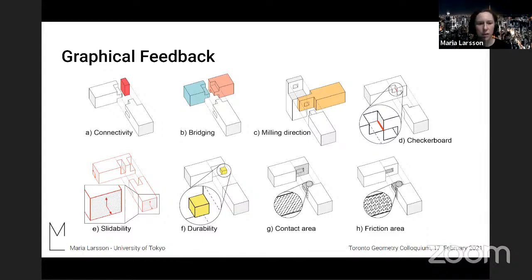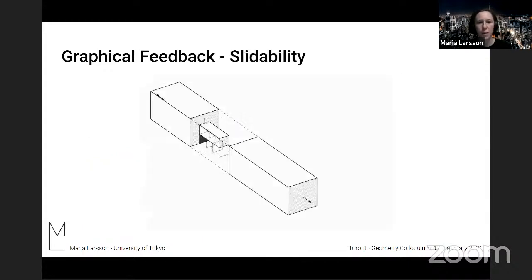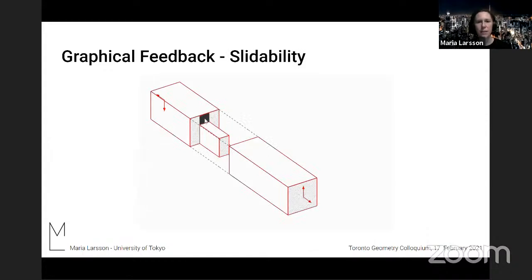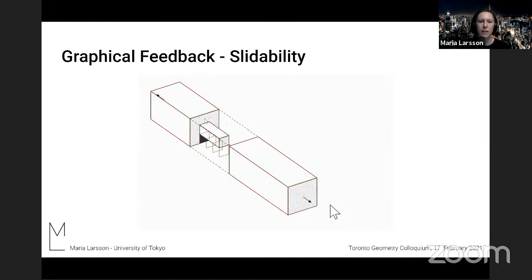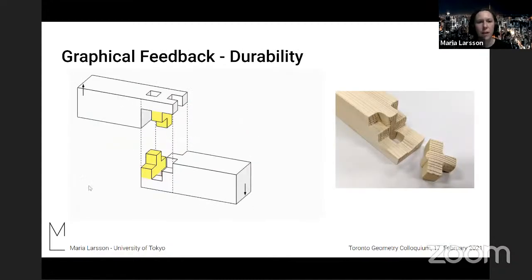And I will show further two of them, slidability and durability. So slidability, for example, here, it's shown by these arrows at the end of the timber, indicates the active sliding directions. And when a timber is sliding in more than one direction, the outline is made red. So that to give you a hint that you should maybe change the joint so it only slides in one direction, which is usually preferable.